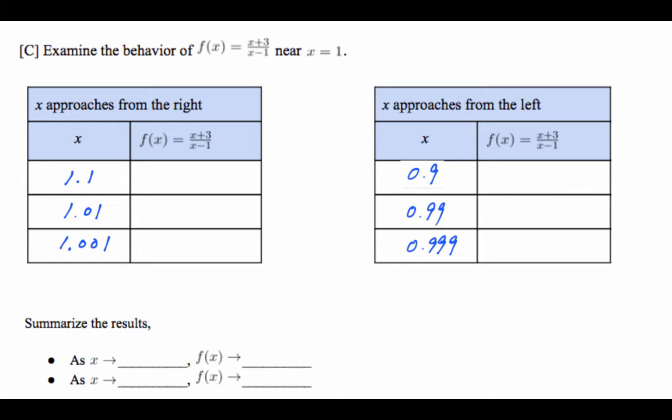I'm going to assume that you paused the video and did that already. And if you did, these are the values that you should get. Have you noticed that as you get closer and closer to 1 from the right-hand side, the value went from 41, 401, 4001, and apparently it's going to get bigger and bigger and bigger. And if you're coming from the left, this is almost negative 40. Negative 39, negative 399, and negative 3999. It seems to be getting bigger and bigger by negative value.